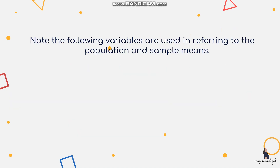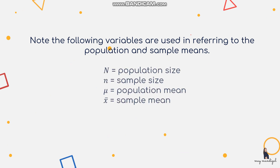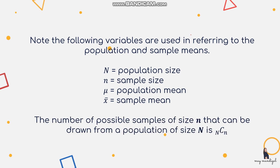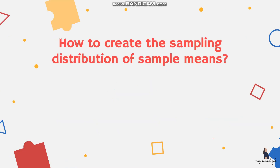Note the following variables: capital N is the population size, small n is the sample size, mu is the population mean, and x-bar is the sample mean. The number of possible samples of size n drawn from a population of size N is given by the combination formula — combination of N taken n at a time.